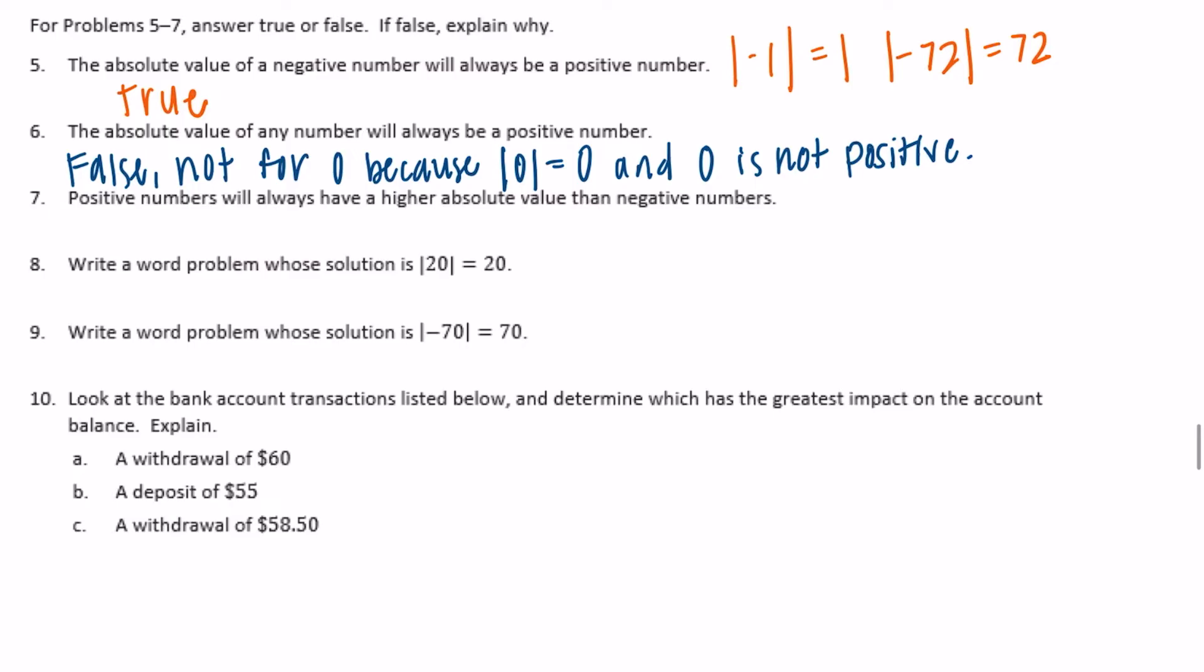Number 7: Positive numbers will always have a higher absolute value than negative numbers. So this is also false because a number and its opposite always have the same absolute value. For example, if we wanted to find the absolute value of 4, that's equal to 4. The absolute value of negative 4 is equal to 4. So a number and its opposite always have the same absolute value. The positive numbers aren't going to be higher than the negative numbers. They're all the same.